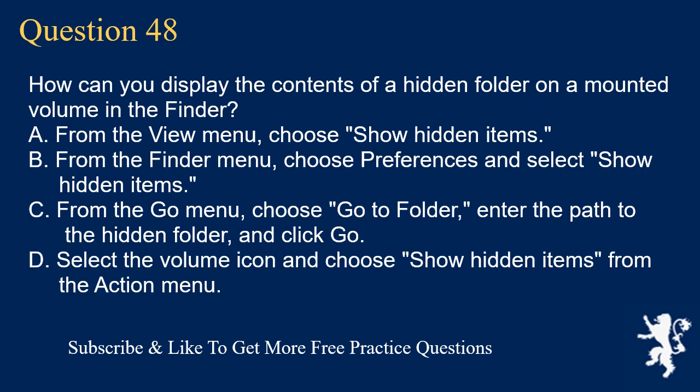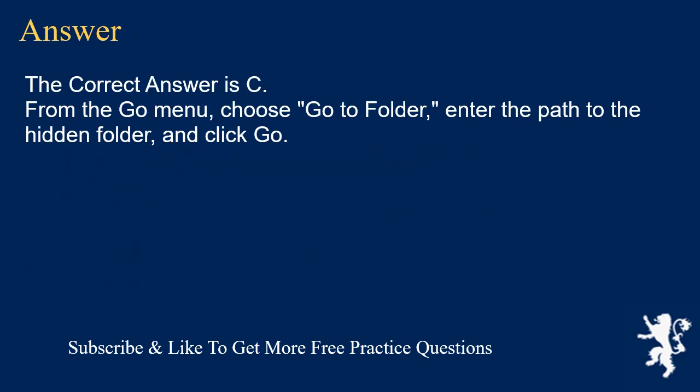Question 48. How can you display the contents of a hidden folder on a mounted volume in the Finder? A. From the View menu, choose Show Hidden Items. B. From the Finder menu, choose Preferences and select Show Hidden Items. C. From the Go menu, choose Go to Folder, enter the path to the hidden folder, and click Go. D. Select the volume icon and choose Show Hidden Items from the Action menu. The correct answer is C: From the Go menu, choose Go to Folder, enter the path to the hidden folder, and click Go.